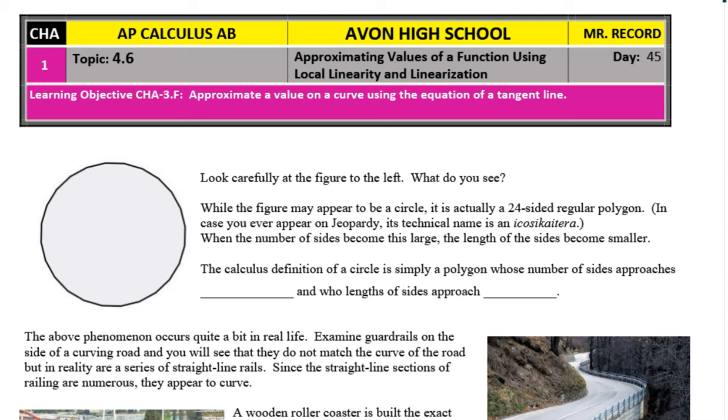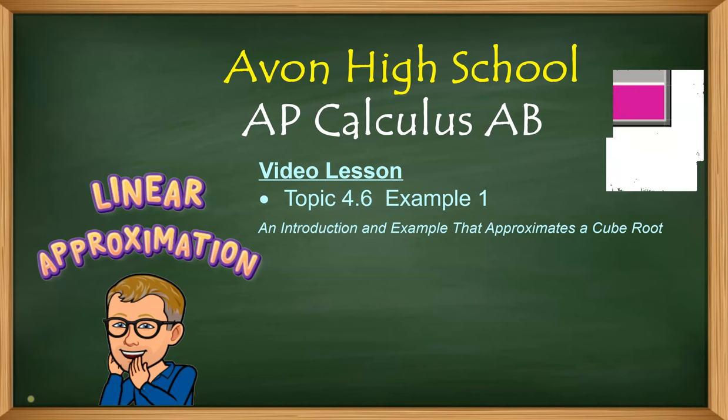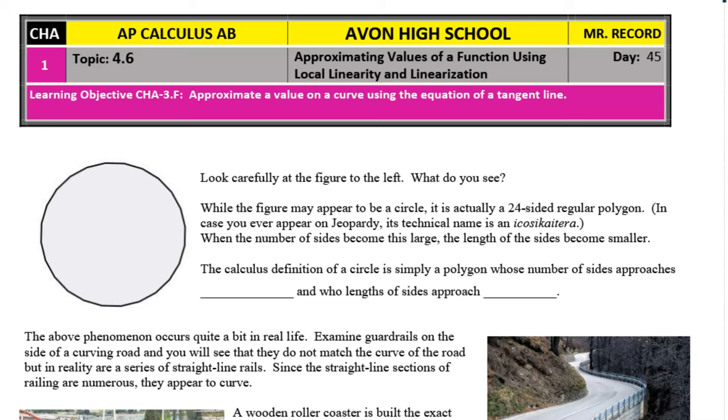In my notes, I like to discuss the reason why we approach this subject in the first place and sort of lay the foundation for something coming up in unit six later on. Look carefully at this figure to the left. What do you see? While the figure may appear to be a circle, it's actually a 24-sided regular polygon. In case you ever appear on Jeopardy, its technical name is an icosikaitera, if I believe correctly.